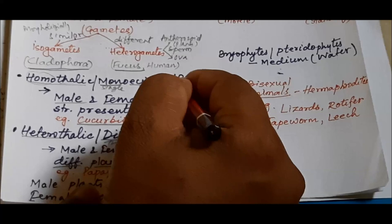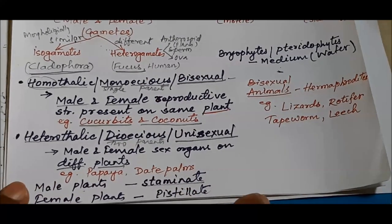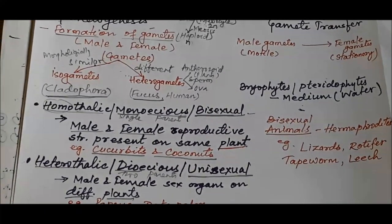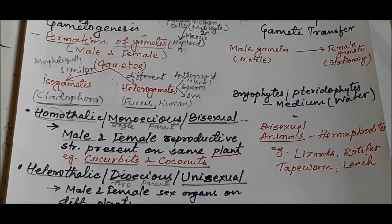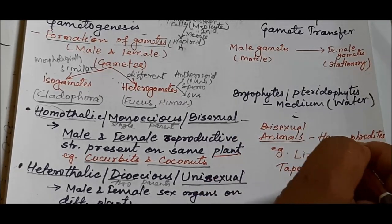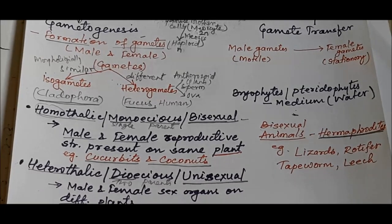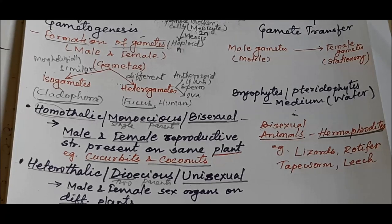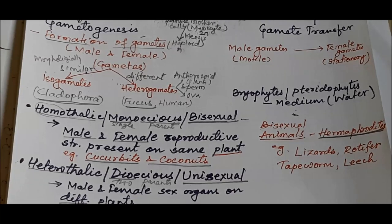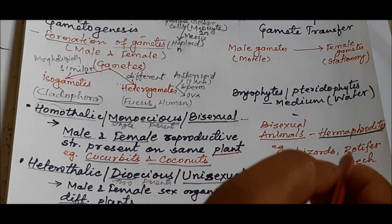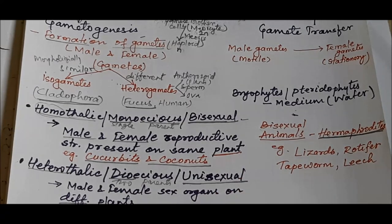In the case of animals, bisexual organisms are called hermaphrodites. A single individual has both male and female sex organs and produces both male and female gametes. Examples of hermaphrodite animals include earthworms, rotifers, tapeworms, and leeches.